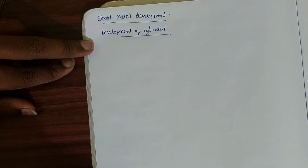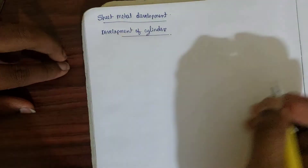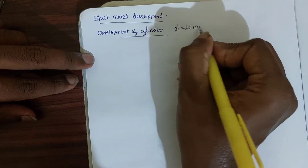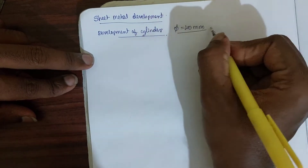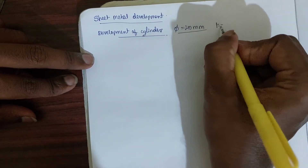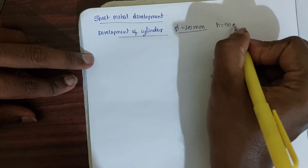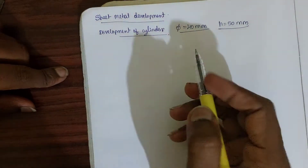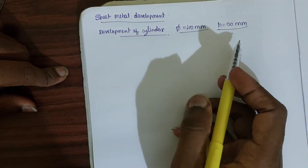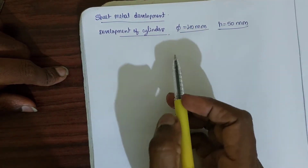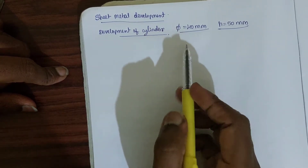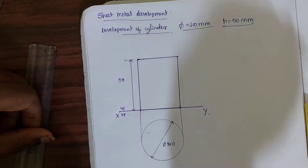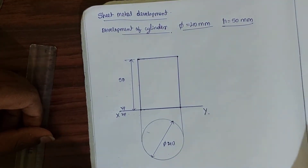First, we are going to develop a cylinder having a diameter of 40mm and a height of 50mm. These are the dimensions we will use. We need to draw the top view and front view of the cylinder for these given dimensions.